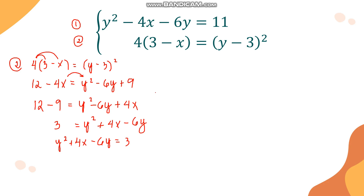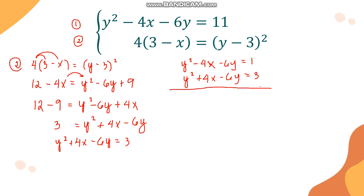Comparing equation 2 in expanded form (y squared plus 4x minus 6y equals 3) with equation 1 (y squared minus 4x minus 6y equals 11), the forms are now similar. We can eliminate by adding: the 4x and negative 4x cancel. The remaining terms give 2y squared minus 12y equals 14.